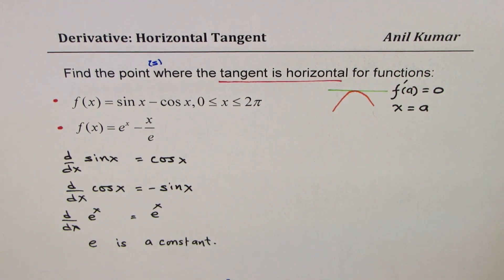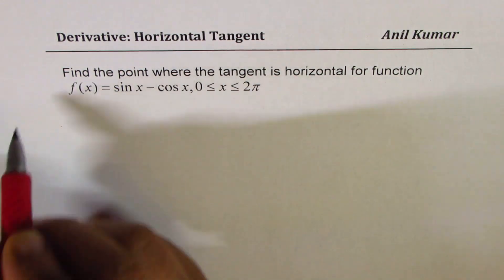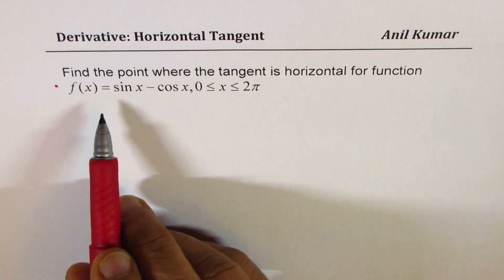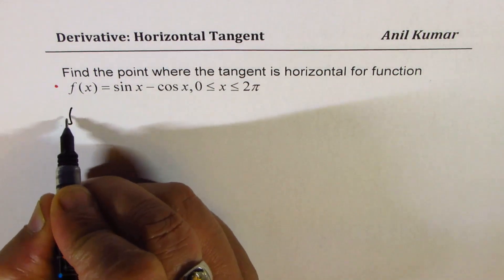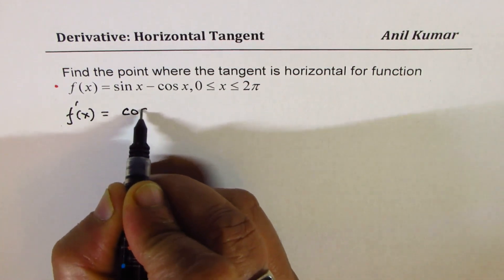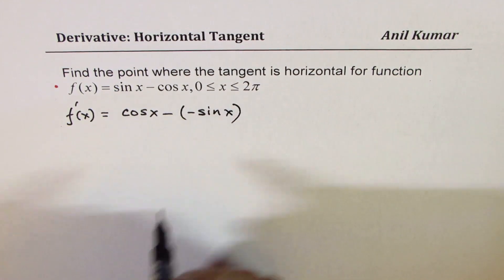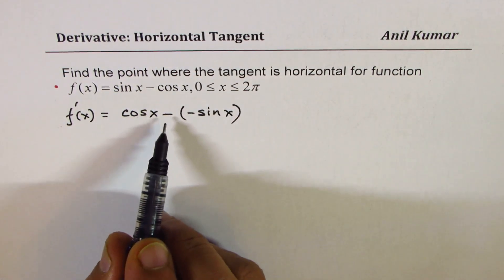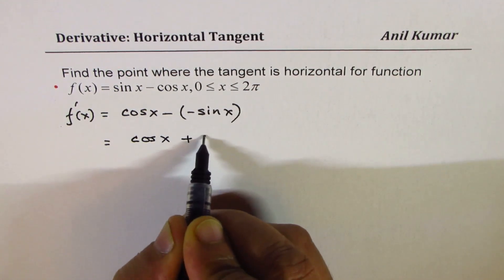Let's move on and solve these questions one by one. The first one: we need to find the point where the tangent is horizontal for the function sin x − cos x. So let's find the derivative. The derivative of this function is: the derivative of sin x is cos x, and the derivative of −cos x is +sin x. So we can write this as cos x + sin x.